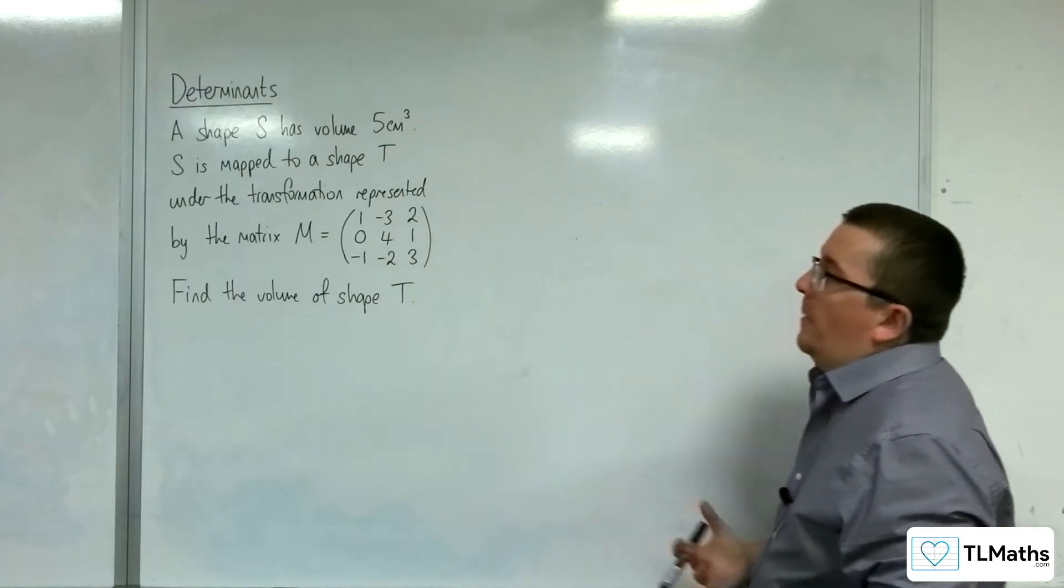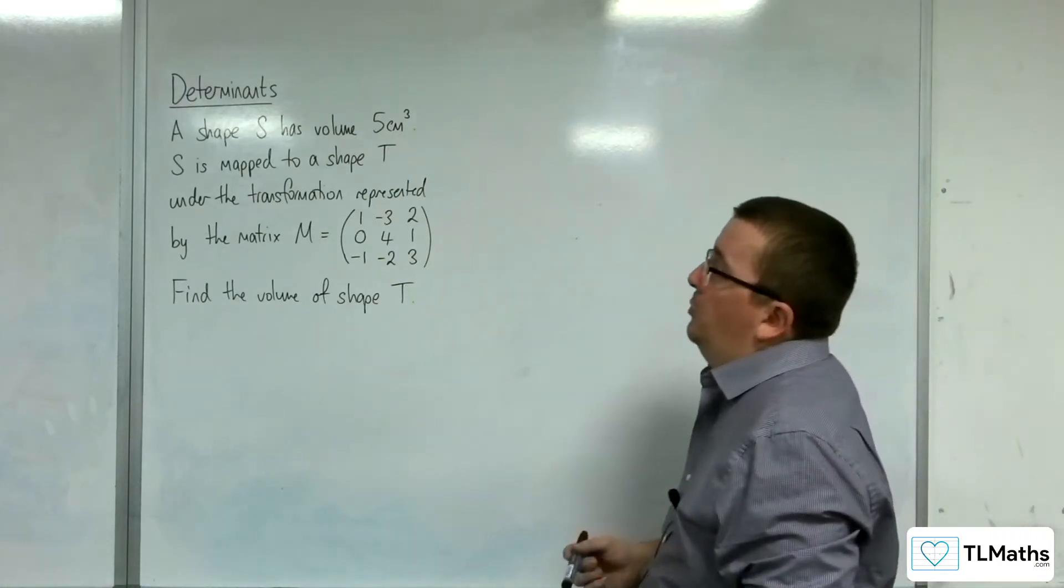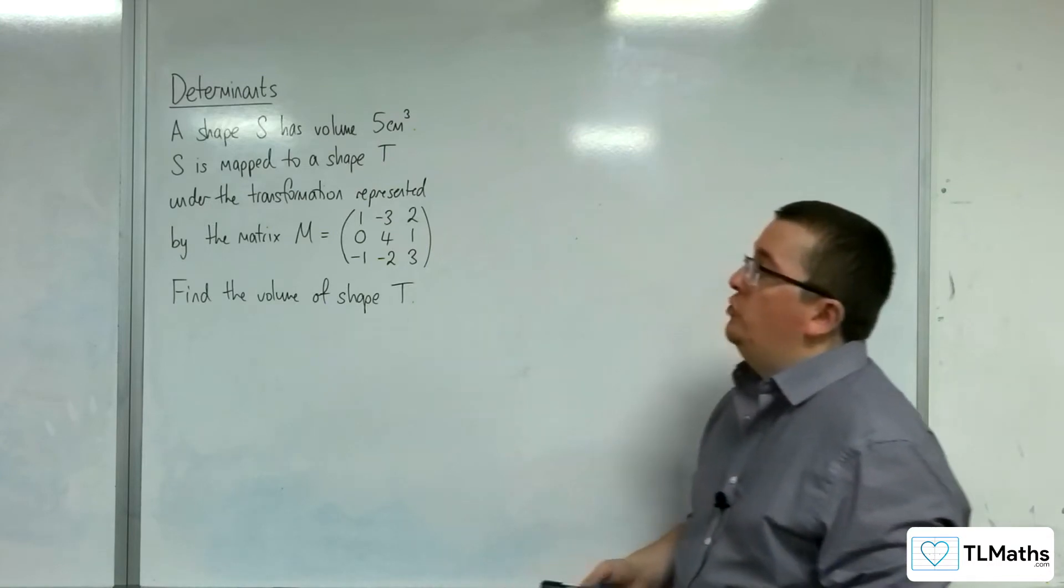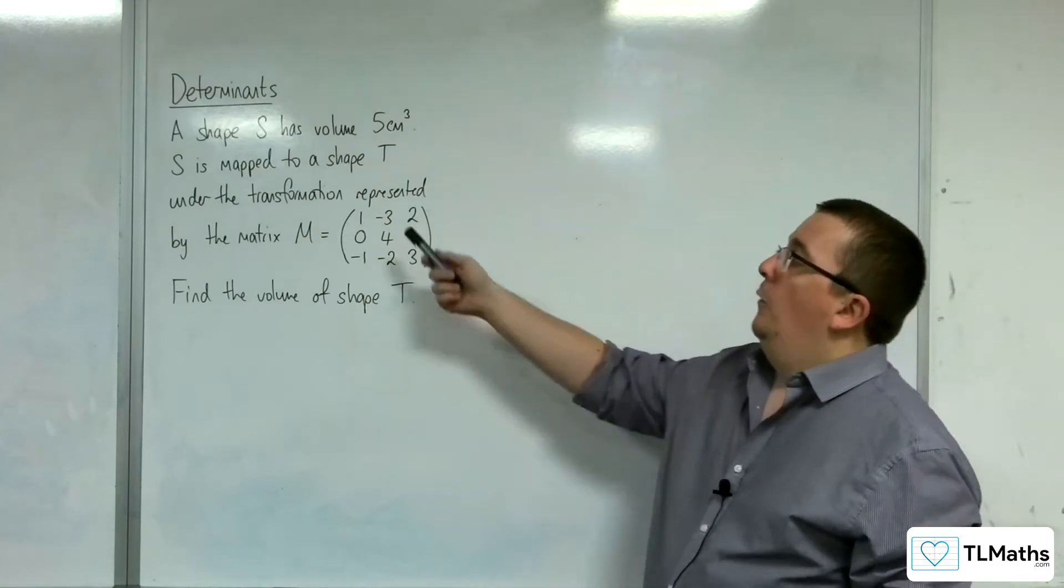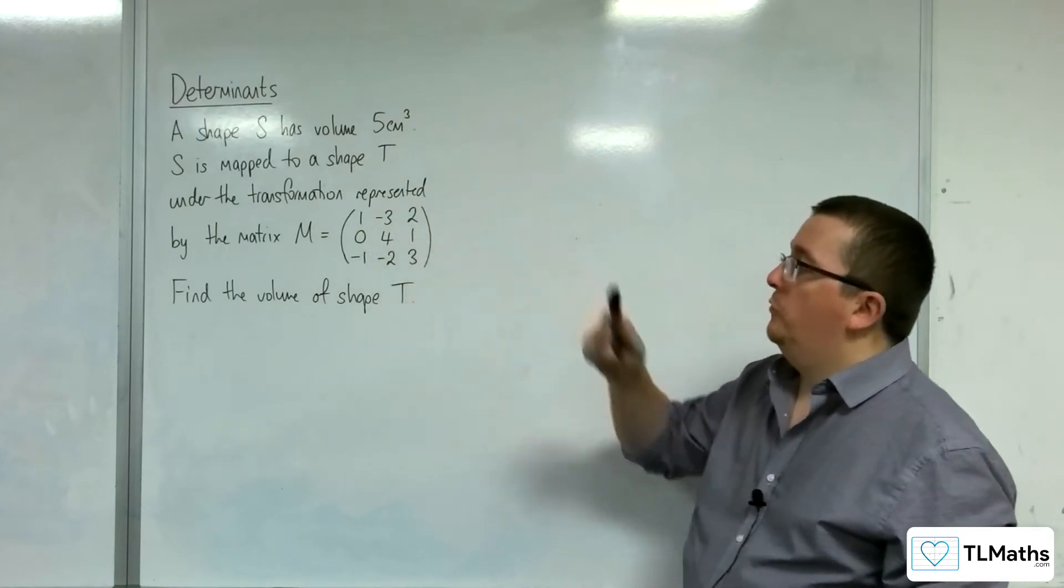So in this problem, a shape S has volume 5 cubic centimeters. S is mapped to a shape T under the transformation represented by the matrix M, which is a 3 by 3 matrix: 1, minus 3, 2, 0, 4, 1, minus 1, minus 2, 3. Find the volume of shape T.